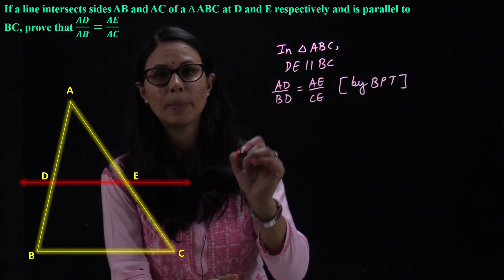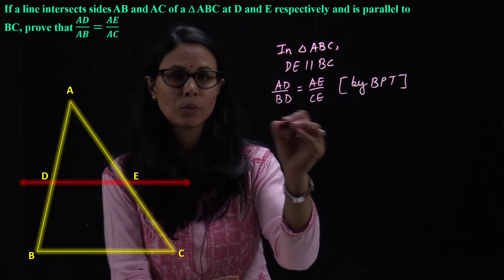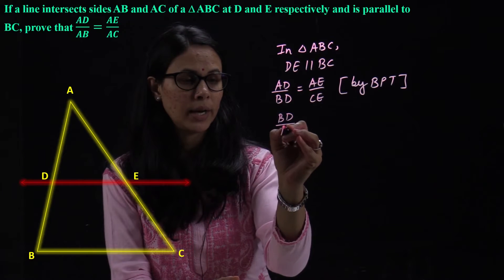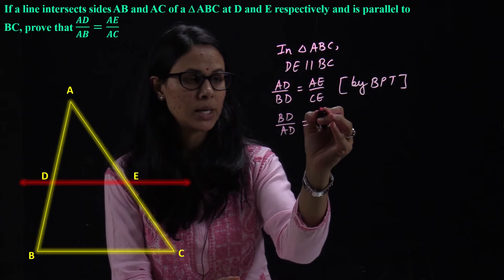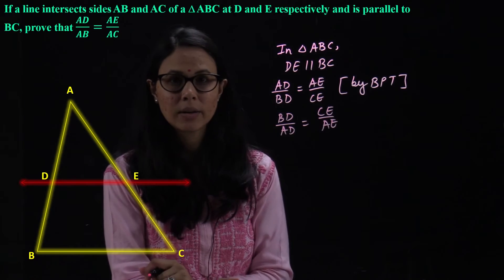So, which terms we need, we need in the numerator. The whole equation is reciprocal. So, BD upon AD, here we have reciprocal, CE upon AE. Right?